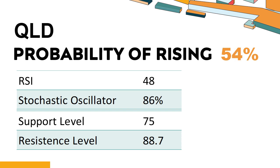QLD: Analyzing the U.S. Market with Technical Indicators. QLD's 14-Day RSI value was 48. When the RSI is above 25 and below 50, it generally indicates that the stock is moderately bearish. This means that the security's price has been falling but has not yet reached oversold levels, typically considered an RSI reading of 25 or lower.